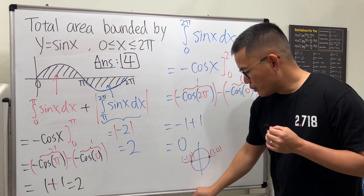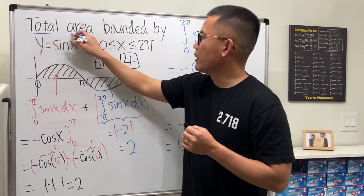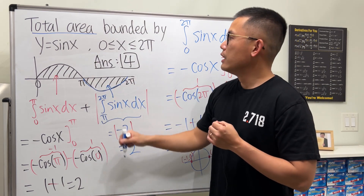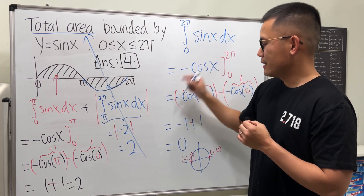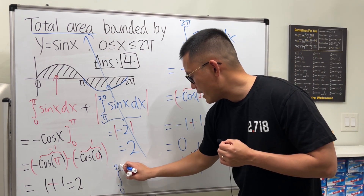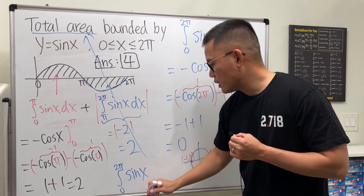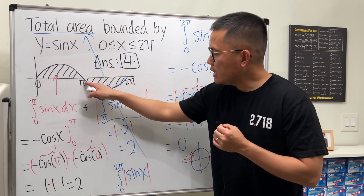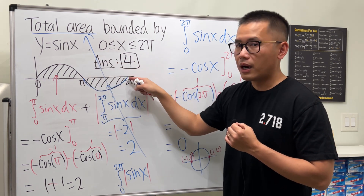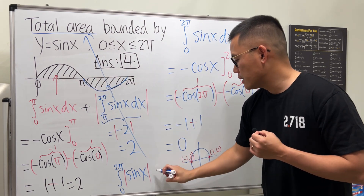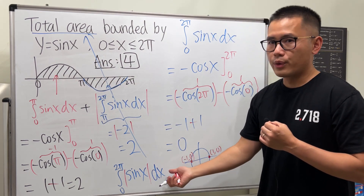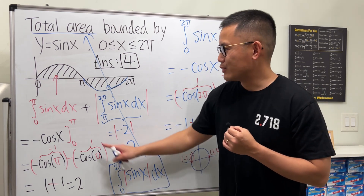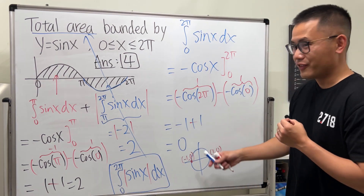You can also do the following: for the total area, instead of splitting the integral, integrate from zero to two pi of |sin(x)| — with the absolute value inside. This flips the negative part above the x-axis. You can evaluate this on a graphing calculator, but if you want to do it by hand you have to break it into cases. Hopefully this helps!